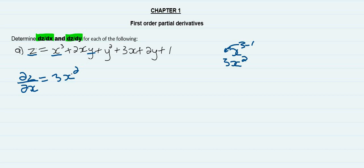When you do Z over the X, that X, Y we treat as a constant. So you see here we have 2XY.